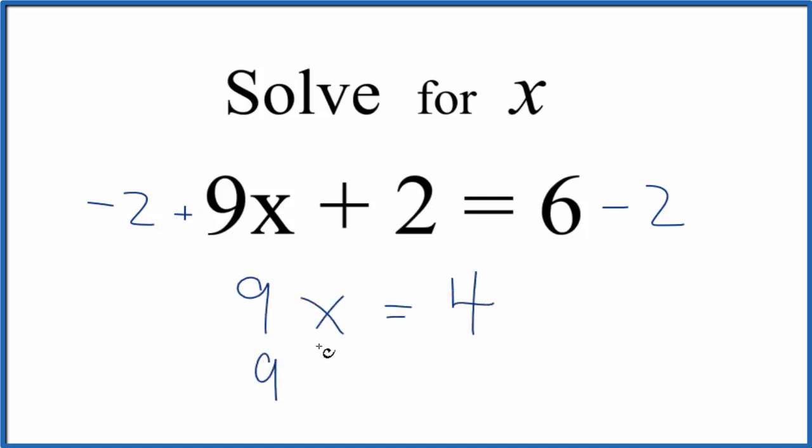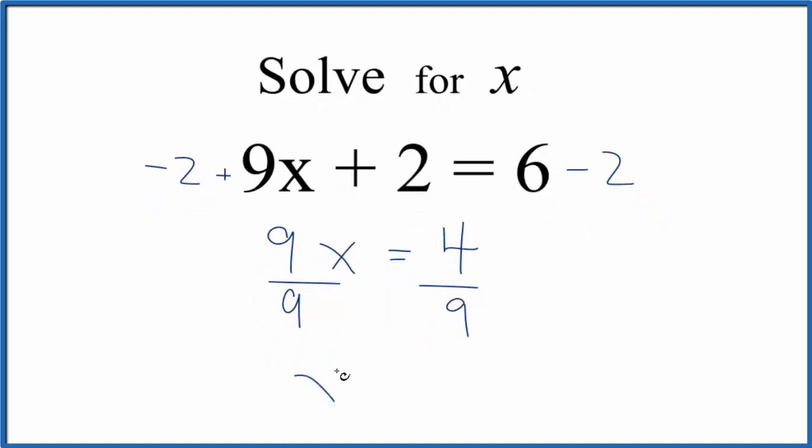Now we could divide both sides by 9. Again, since we do it to both sides, it doesn't really change the values here. 9 over 9 is 1, so 1x, we just write x, equals 4 over 9.